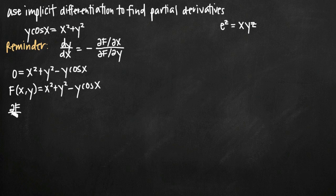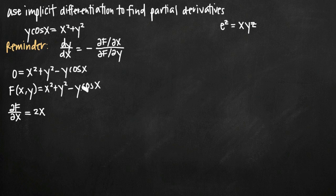The partial derivative of F with respect to x: we take the derivative treating y as a constant. The derivative of x squared is 2x. The derivative of y squared is zero because y is a constant. For minus y cosine of x, the derivative of cosine is negative sine, but y acts as a constant coefficient, so the negative on the sine cancels with the negative sign, giving us plus y sine of x.